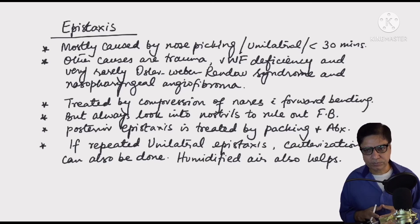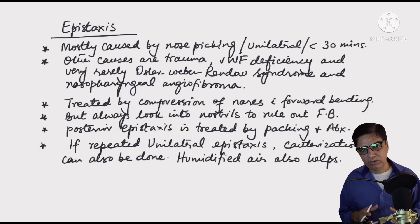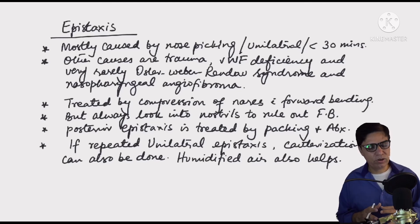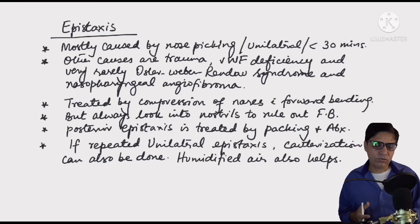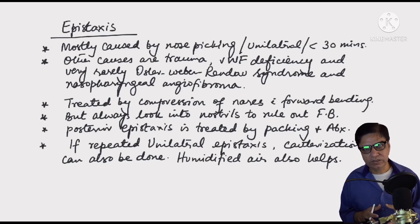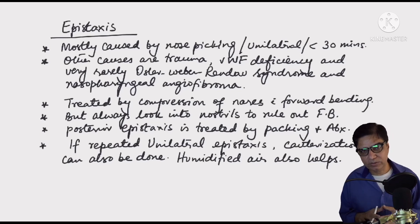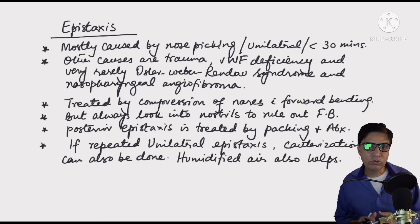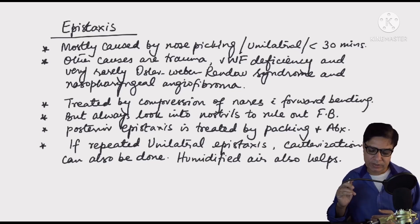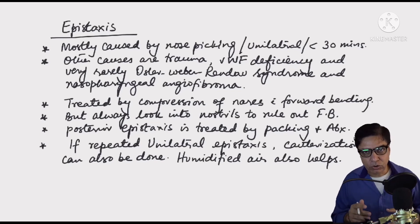If treated with pressure and no other cause is found — such as von Willebrand deficiency, which is treated with desmopressin — and epistaxis is recurrent, cauterization can help. Chemical or electrical cauterization of the bleeding vessels can reduce recurrences. In some chronic cases, humidified air also helps improve epistaxis and reduce recurrence.